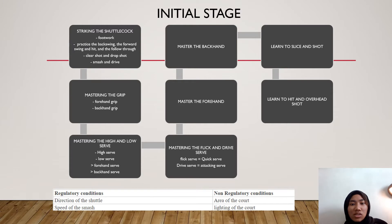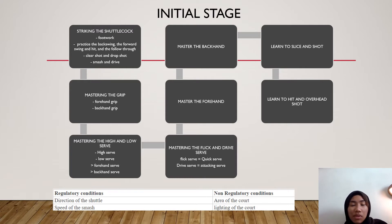For the initial stage of the Gentiles 2 Stage Model, learners will be getting the idea of the movement. The learners will work to achieve two goals: first, to organize movement patterns to enable some degree of success in achieving the action goal; and second, to discriminate between regulatory and non-regulatory conditions in the environmental context.